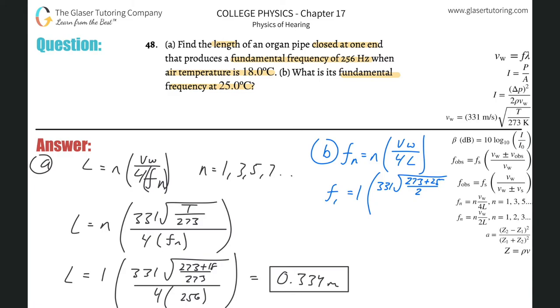Then divide it by 4 times the length of the tube, which is 0.334. And I'll use the exact value when I calculate. So this is going to be 331 times square root, parentheses, 273 plus 25, close the parentheses, divided by 273, all under the radical. And then divide that by 4 times that exact value.